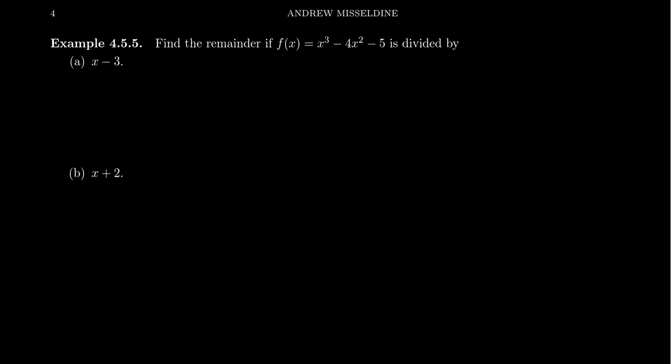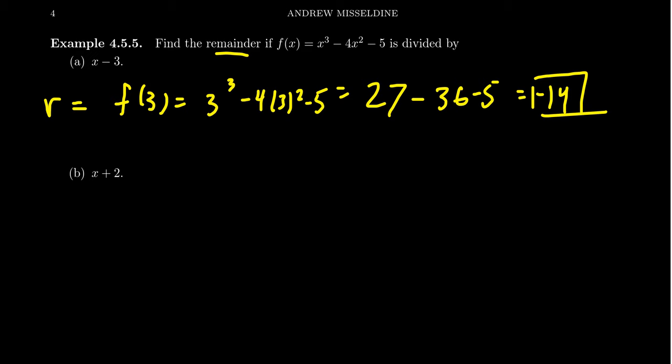Let's focus on the remainder theorem for this moment. So let's find the remainder of f(x), which equals x cubed minus 4x squared minus 5, if it's divided by x minus 3. Well, if we want to find the remainder by the remainder theorem, the remainder here would just look like f(3). We could just evaluate the function. And so our remainder r is going to equal f(3), which we see is 3 cubed minus 4 times 3 squared minus 5. That gives us 27, we're going to subtract from that 3 squared is 9 times that by 4, we get 36 minus 5. 27 take away 36 is a negative 9, take away another 5, you're going to get negative 14.